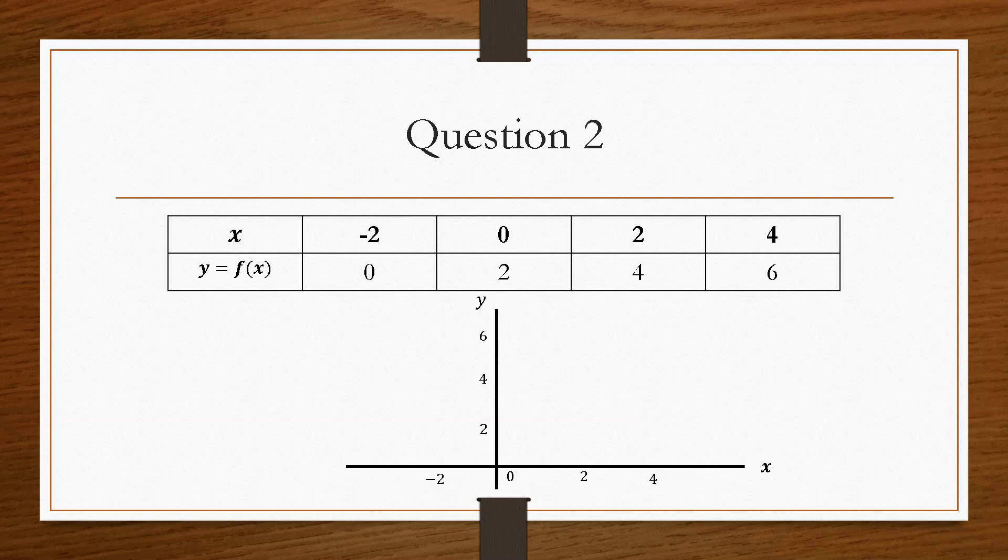So then we will just draw our x and y axis, we'll label them, and we will then plot the data that we created in the table. So there's minus 2, 0, 0, 2, 2, 4, and 4, 6. And then we run a line through that, and that is our equation of y equals x plus 2.